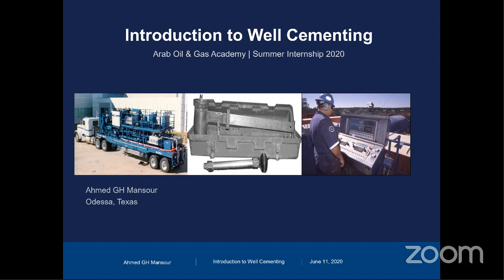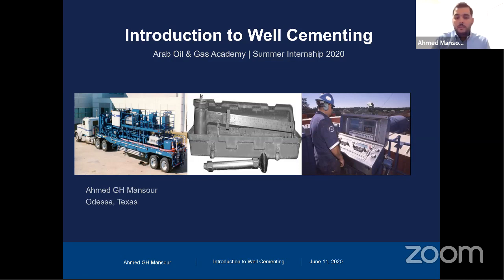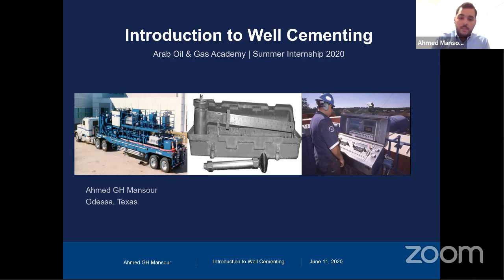What's the difference between the float collar and the float shoe? The float shoe is similar to a guide shoe but it has a valve. It helps guide the casing while running it inside the hole. It also has a one-way valve that allows cement to go through it and not come back into the casing. The float collar is a valve that exists one to two joints above the float shoe — it's a kind of safety valve to prevent cement from flowing back into the casing after bumping the cement.